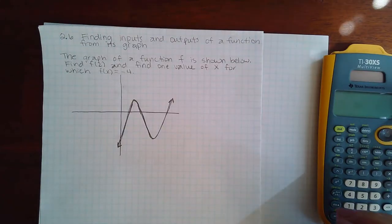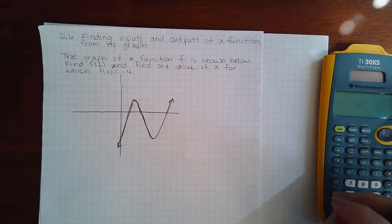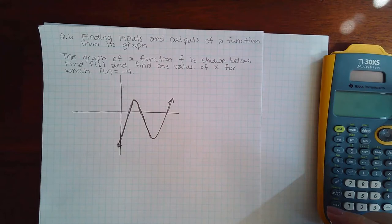Here I have 2.6 finding inputs and outputs of a function from its graph. The graph of the function f is shown below. Find f of 2 and find one value of x for which f of x equals 4.